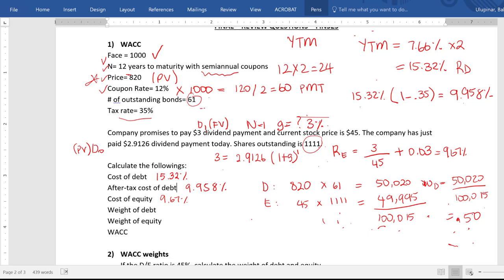And to calculate the weight of equity, you can do 49,995 divided by this total value, or you can just subtract this 50% from the whole, which is 100%. So this will be 50% as well. And weighted average cost of capital is pretty easy to calculate now.